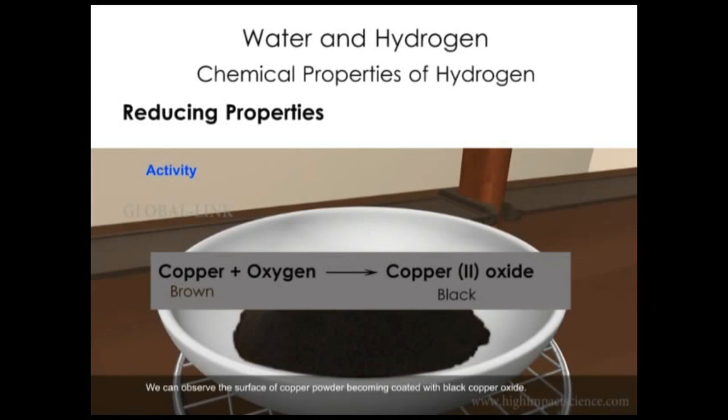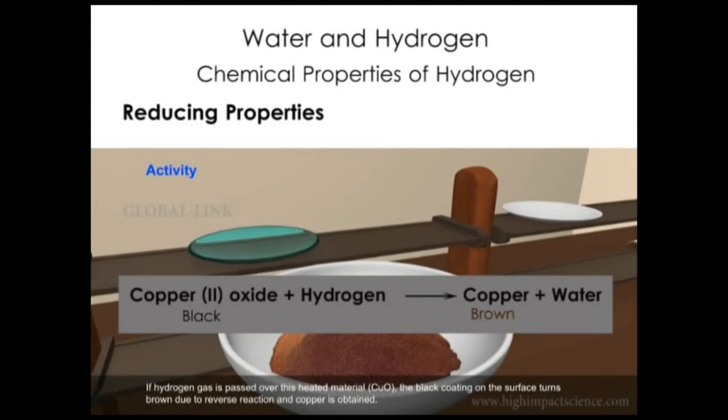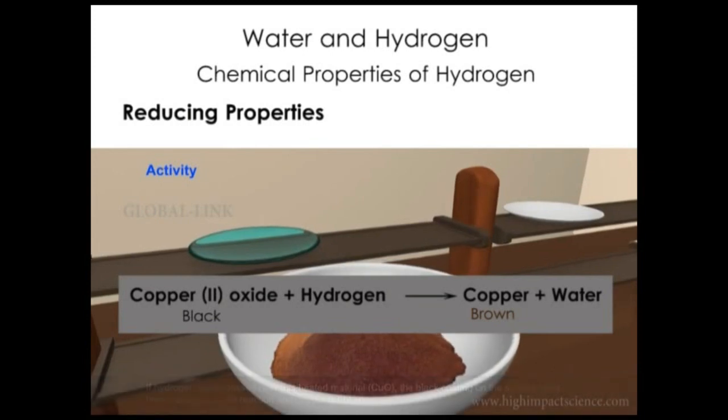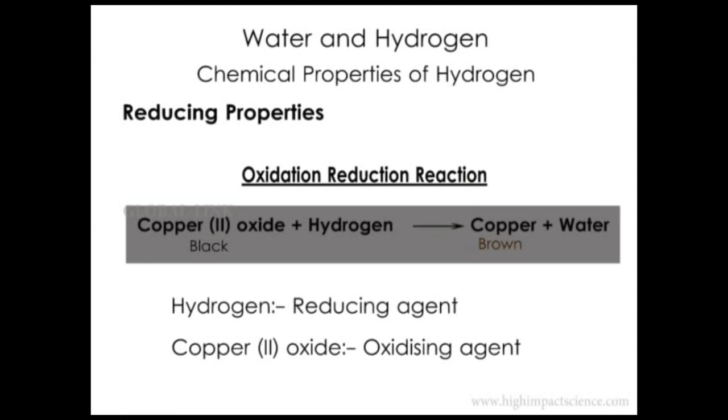If hydrogen gas is passed over the hot copper(II) oxide, the powder turns brown due to formation of copper. Hydrogen displaces copper from its oxide. This is called reduction. In the process, hydrogen itself is oxidized to water. Because both oxidation of hydrogen and reduction of copper(II) oxide occur simultaneously, this is called an oxidation-reduction reaction. Hydrogen is a reducing agent, while copper(II) oxide is the oxidizing agent in this case.